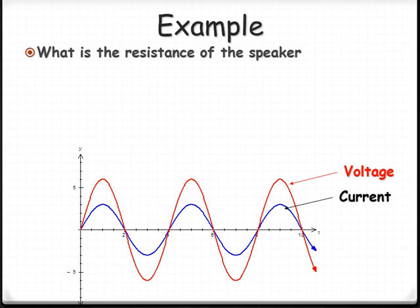What's the resistance of the speaker? Okay, we know power, we know voltage, we know current as well. So we know all these things. Looking at this, we've got voltage over current, which is 6 divided by 3. We've got a 2 ohm resistance.